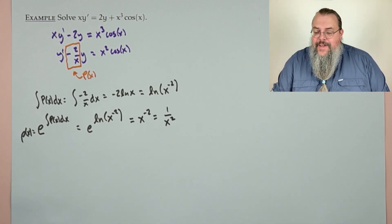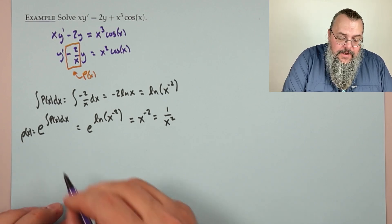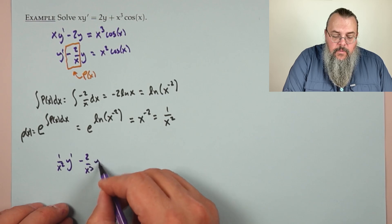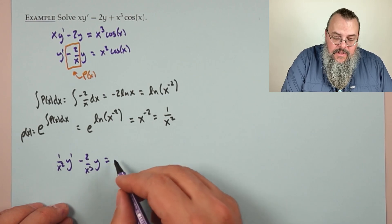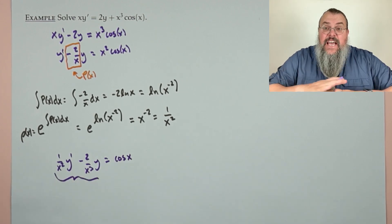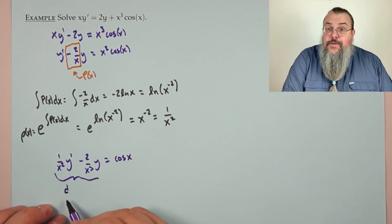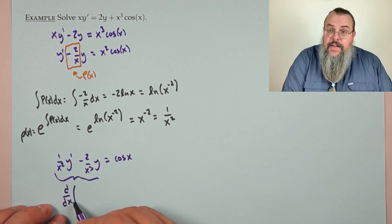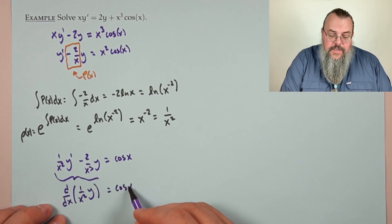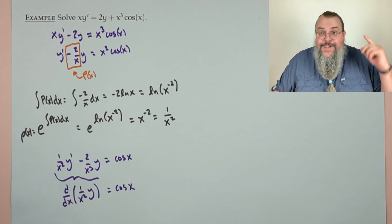Multiply everything by 1/x²: we get (1/x²)y′ − (2/x³)y = cos(x), because x² and 1/x² cancel on the right. We don't need to think about the left-hand side — it's automatically the derivative of (1/x²)·y. What's easy to integrate? A derivative.